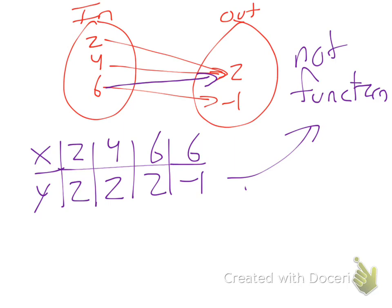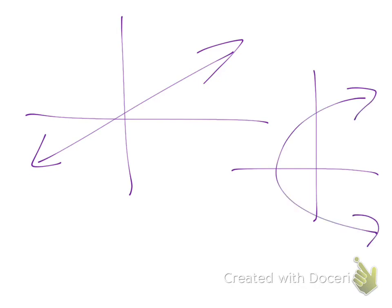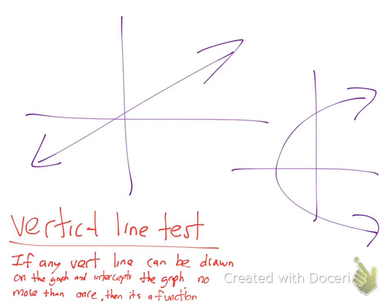What if we gave you a graph? How can I tell if that graph is a function? One of them is, one of them is not. Let's use the vertical line test. The vertical line test says that if any vertical line can be drawn on the graph and intercepts the graph no more than once, then it is a function. Therefore, if it intercepts more than once, it's not a function.